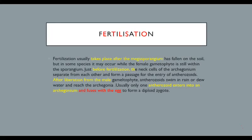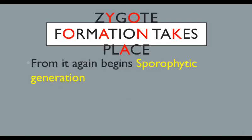Fertilization is carried out with the help of water. The antherozoids swim to the egg and fuse with the egg nucleus, forming a zygotic nucleus that secretes a wall around it. We then get our zygote, also known as the oospore. Here the gametophytic generation ends and the initiation of the sporophytic generation begins.